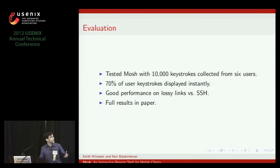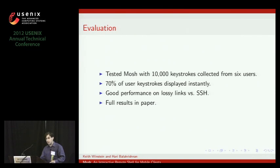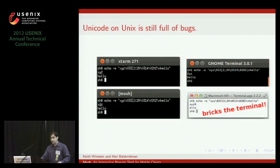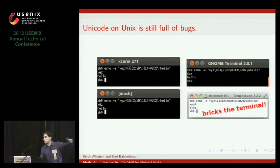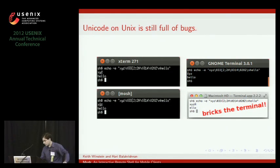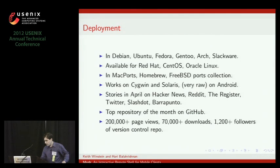We evaluated — the details of the evaluation are in the paper. We found 70% of user keystrokes can be displayed instantly, so our median user interface response is zero. It works over lossy links. We found that Unicode on Unix is still full of bugs — the details are on our website. But you can see if you echo the same string to four different terminal emulators, you get the circumflex in four different places. The macOS version has a particularly unique interpretation.